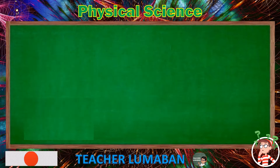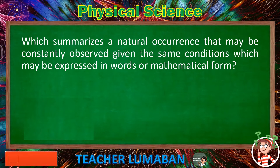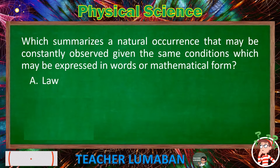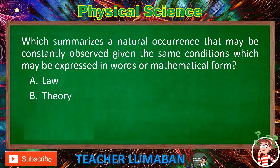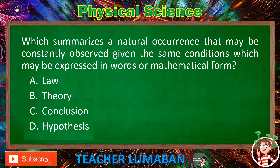Which summarizes a natural occurrence that may be constantly observed given the same conditions, which may be expressed in words or mathematical form? Letter A: Law. Letter B: Theory. Letter C: Conclusion. Letter D: Hypothesis. Choose the suitable answer based on the given choices in 5 seconds.